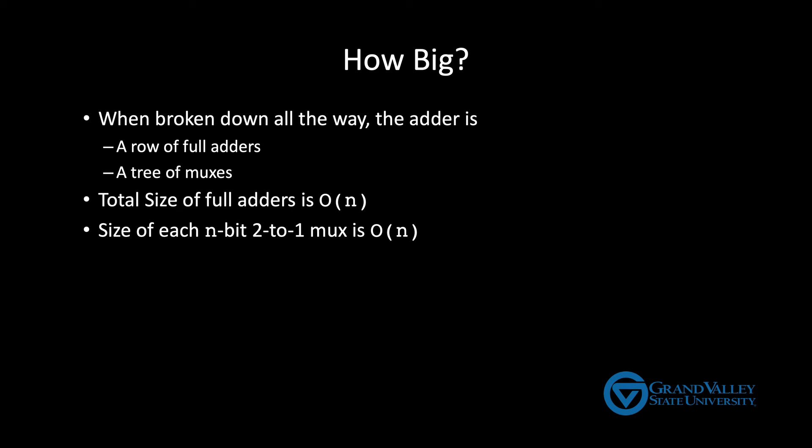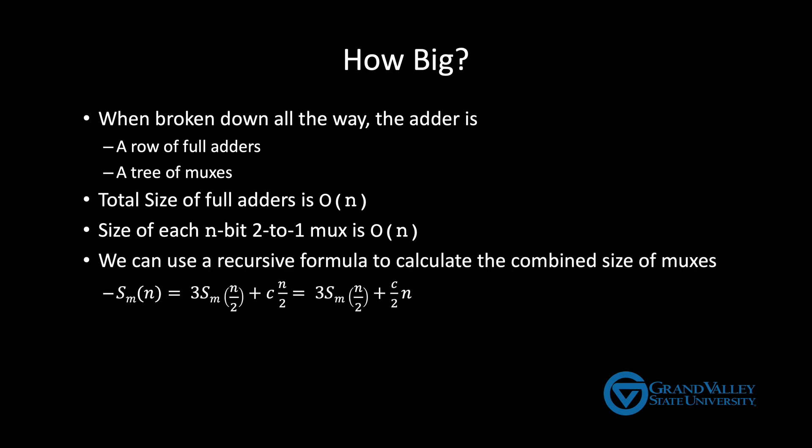The trick is that the MUXs change size. As you work your way through the tree, the MUXs get smaller. So we have to figure out how to add up all of these changing sizes of all these different MUXs. And we can do that with a recursive formula.